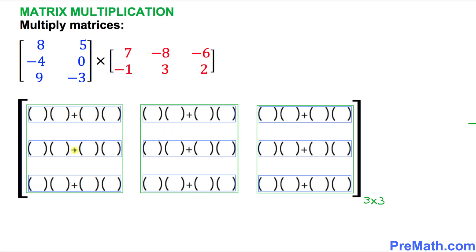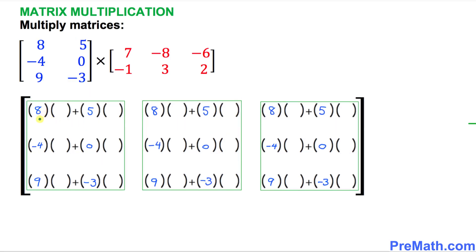Now I'm going to show you how to fill out these empty slots. Let's focus on our left hand side blue matrix. Look at the first column: 8, negative 4, 9 — these numbers go into the left hand side first slot. The next column, 5, 0, negative 3, goes into the next slot. So this fills out as 8, negative 4, 9 and 5, 0, negative 3. Likewise, we fill out the blue numbers in the remaining columns as well.